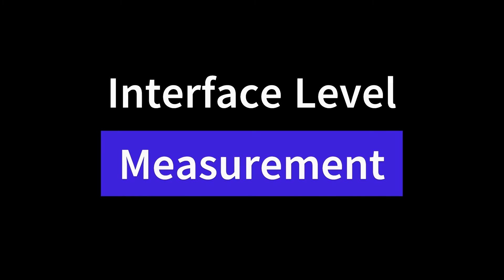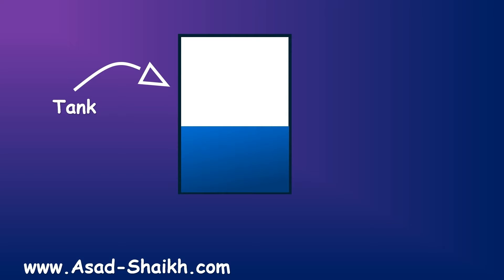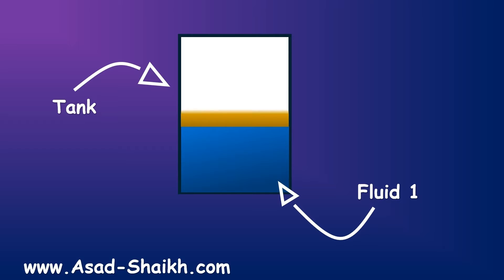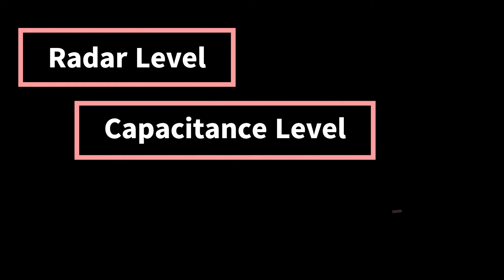In this video we learn about Interface Level Measurement. Here is the tank available with us. The heavier fluid will come at the bottom — let's call it fluid 1 — and the lighter fluid will come at the top, so let us call it fluid 2. But we are not interested to measure the level; we are interested to measure the interface level between them. We have various kinds of technologies available to measure.